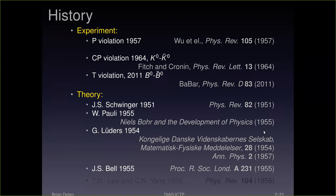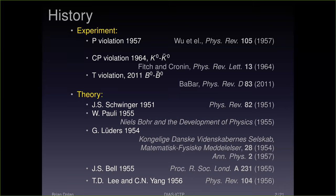Bell's paper was published the same year as Pauli's. Pauli's paper was published in a book, so you don't know what month it was published. The book takes longer than a paper, so chances are Pauli did this in 1954. But even so, I think there's a very strong argument for giving Bell the credit for the CPT theorem, as well as Pauli and Lüders. And then there's the famous paper of Lee and Yang in 1956, when they pointed out that parity symmetry had not been checked in weak interactions and suggested the experiment to Wu.